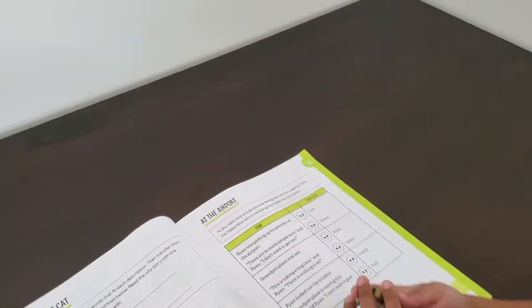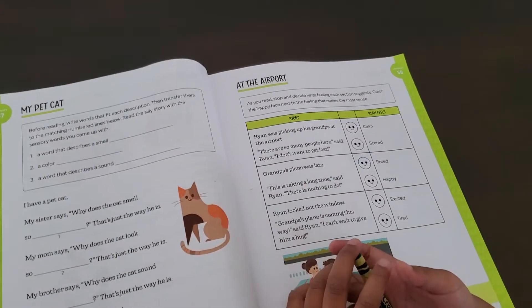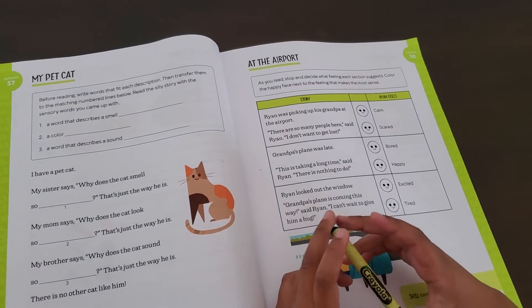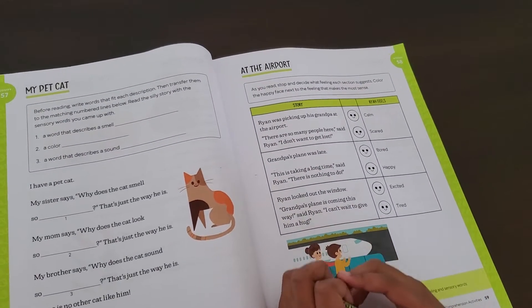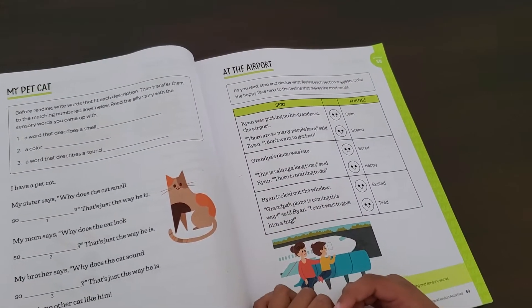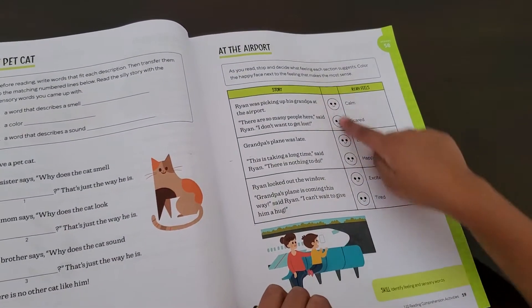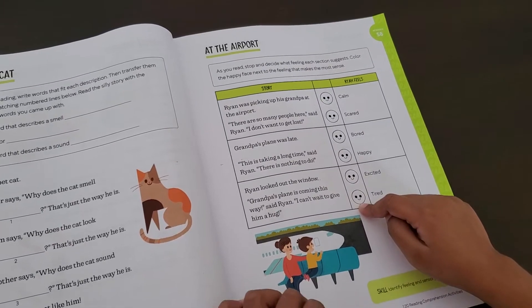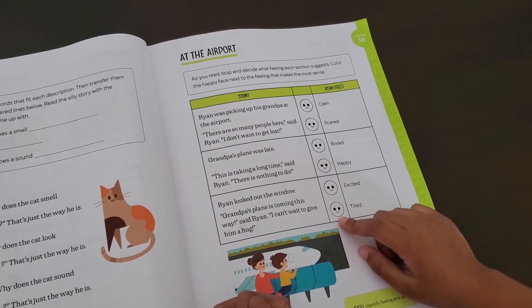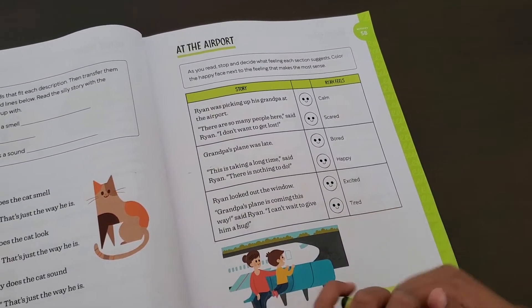At the airport. As you read, stop and decide what feeling each section suggests. Color the happy face. Do you see all these happy faces? Next to the feeling that makes the most sense.